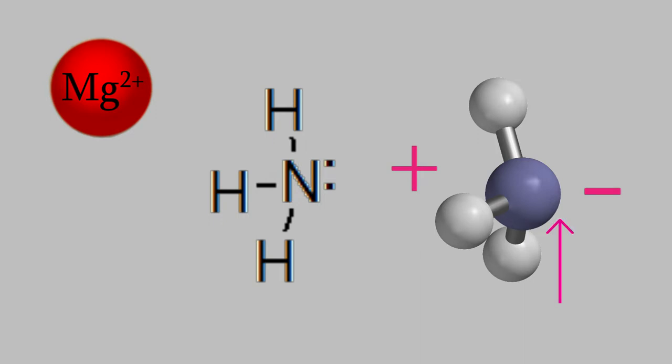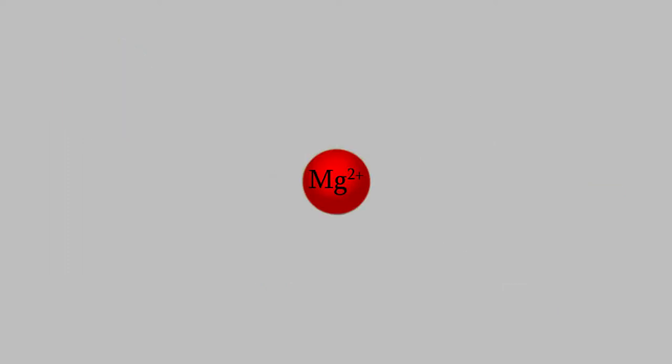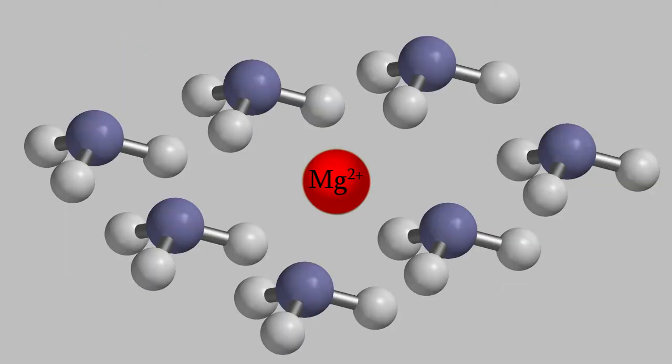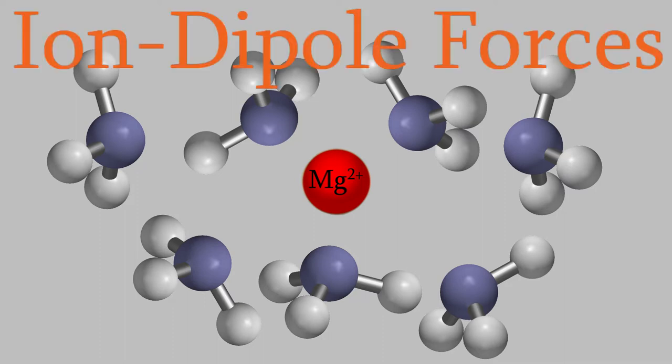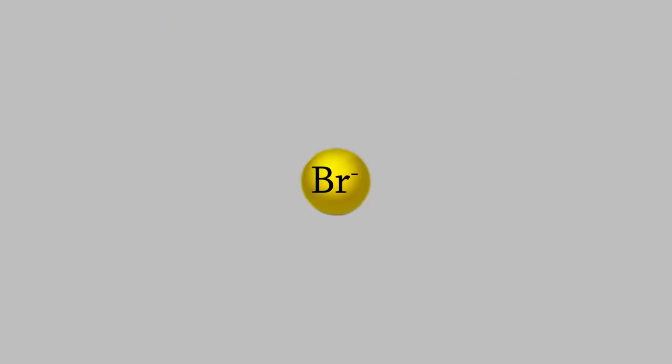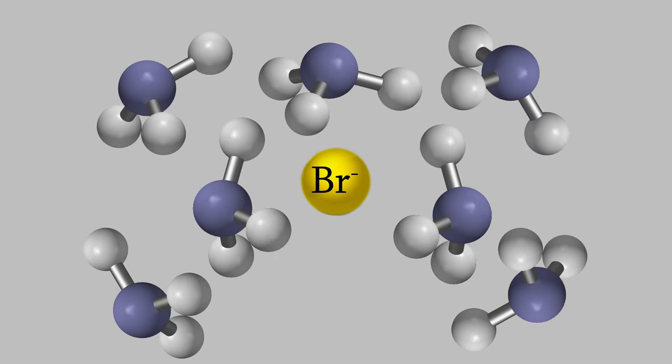The negative side is this end of the molecule, since the nitrogen is more electronegative. Because it has a negative charge, it gets attracted to the positively charged magnesium. If the magnesium is placed in a group of ammonia molecules, the ammonias will orient so that their nitrogens are pointing toward the magnesium ion. This is an example of an ion-dipole force. The same is true if we have a negatively charged ion, like bromide — in this case, the positively charged side of the ammonia molecules will be attracted to the ion.